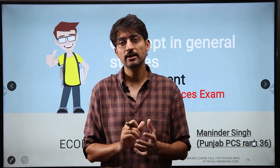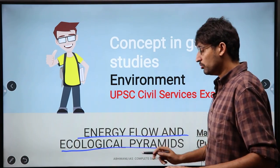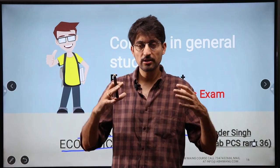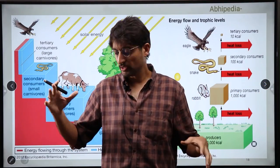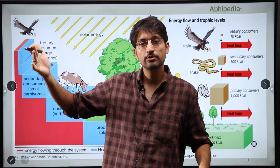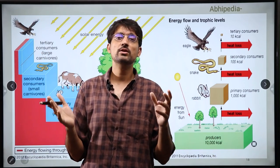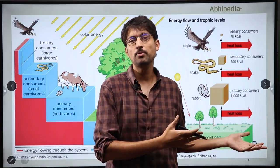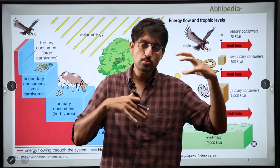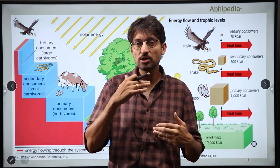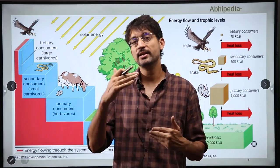Concepts in General Studies. Today we will be doing a very important topic on Energy Flow and Ecological Pyramids. In nature, one organism can consume another organism, and that organism can consume another organism. It means that you are probably the lunch for somebody and you have lunch of somebody. Everybody consumes everybody, and this consumption is the energy flow from one species to another species.